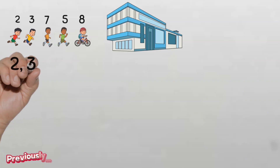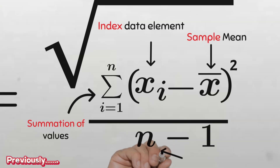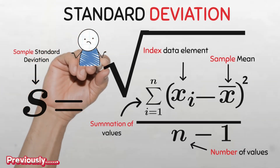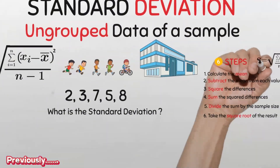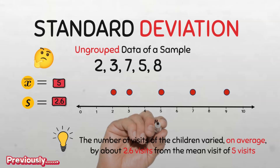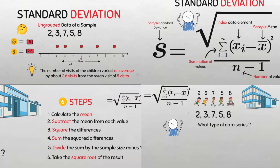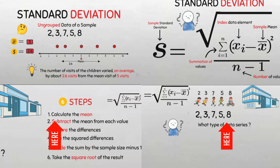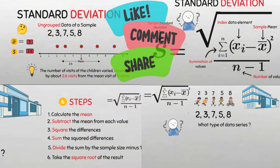In summary, we looked at how to compute the standard deviation of ungrouped data of a sample of five children. We explained the formula and showed six easy steps to obtain the standard deviation, and finally we interpreted the standard deviation in the context of our data. If you want to learn how to calculate the standard deviation for discrete series data, check out this video here. For grouped data with continuous series, check out this other video right here. Don't forget to like, share, and subscribe for more easy study content, and thanks for watching.